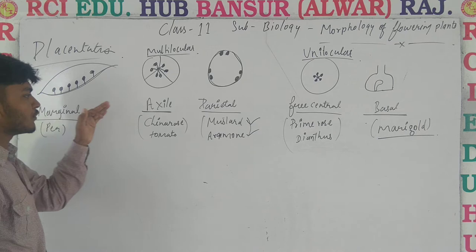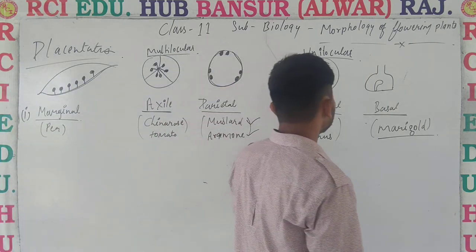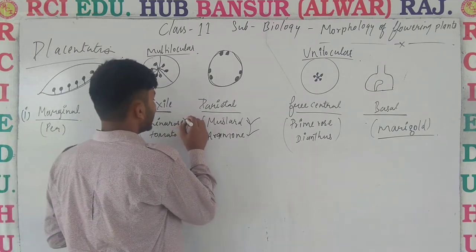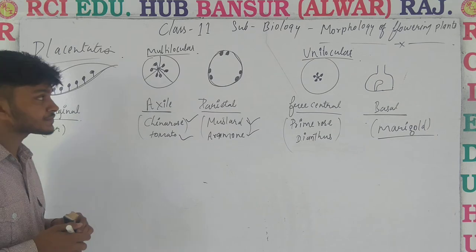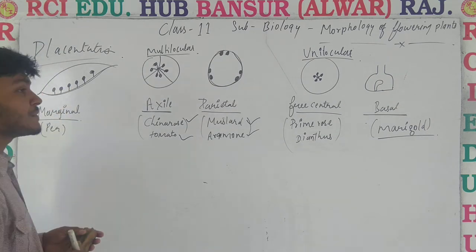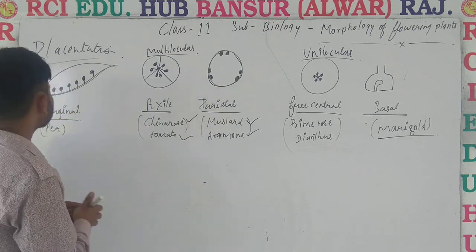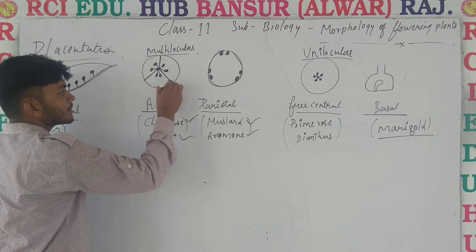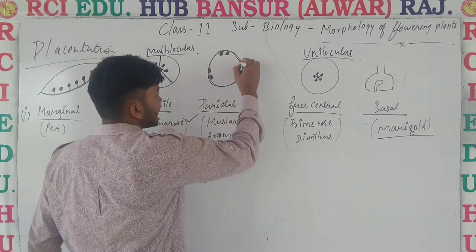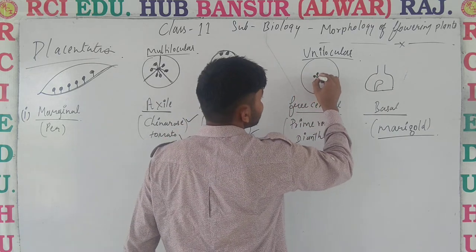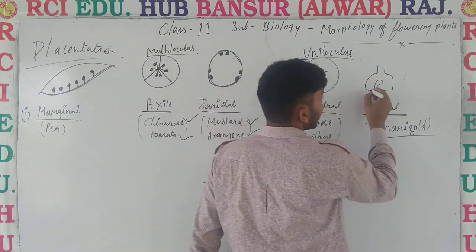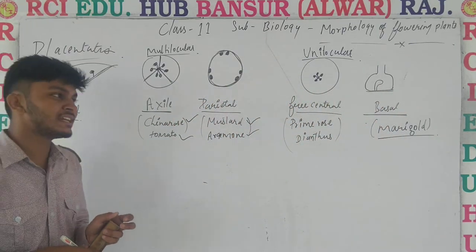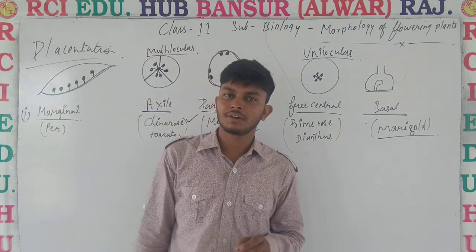So to recap: first was marginal, second was axile (examples: china rose and tomato), third was parietal, fourth was free central, fifth was basal. Placentation होता क्या है — the arrangement of ovules in the ovary. Marginal पे margin पे, axile में axis पे multilocular, parietal में peripheral region, free central में center unilocular, basal में base पे. I hope you have understood what is placentation and what are the kinds of placentation. Thanks, have a nice day.